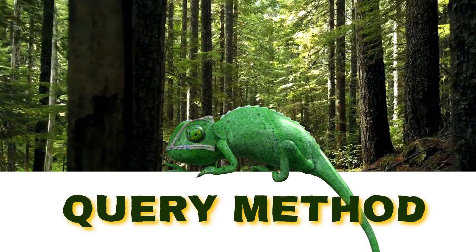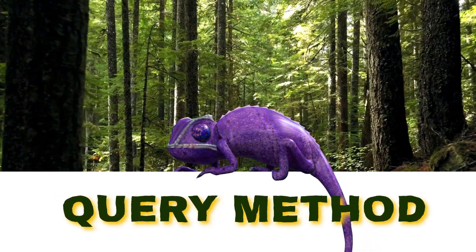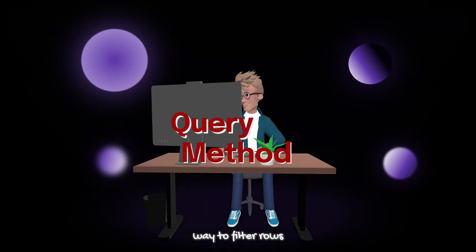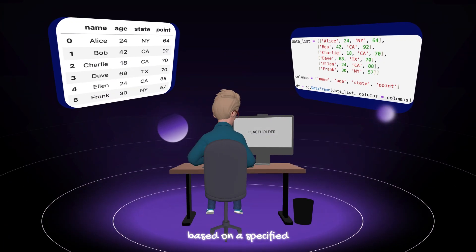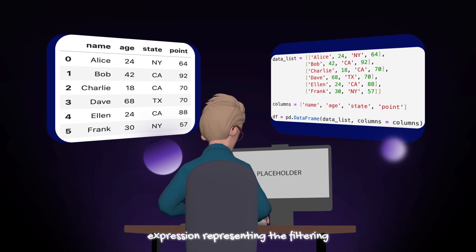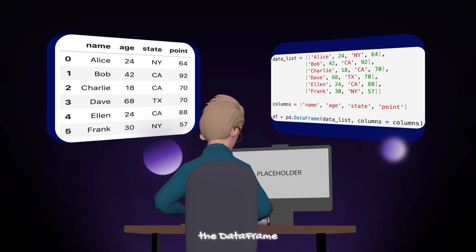Let's turn our attention to the powerful capabilities offered by the query method. The query method in pandas provides a convenient way to filter rows from a dataframe based on a specified condition. It accepts a string expression representing the filtering condition and evaluates it within the context of the dataframe.